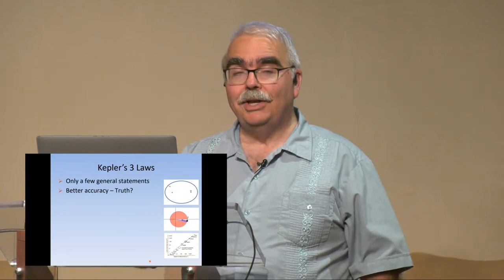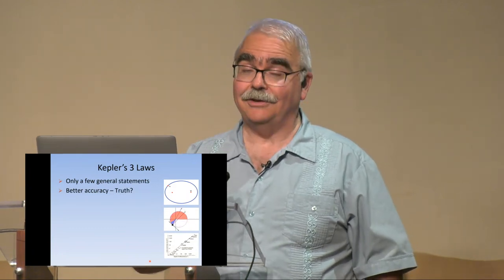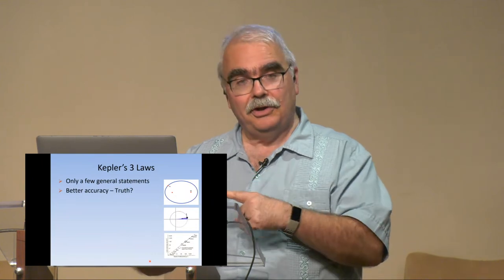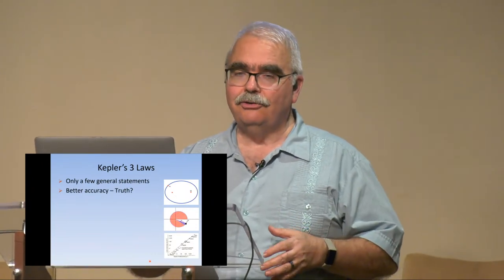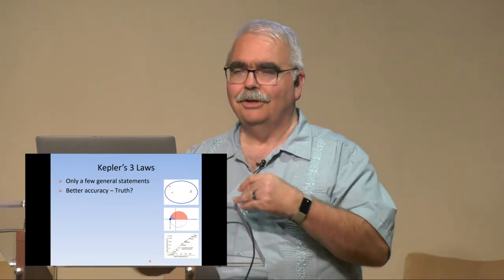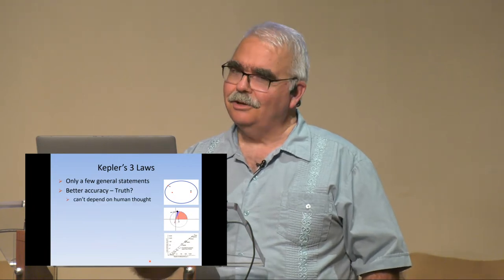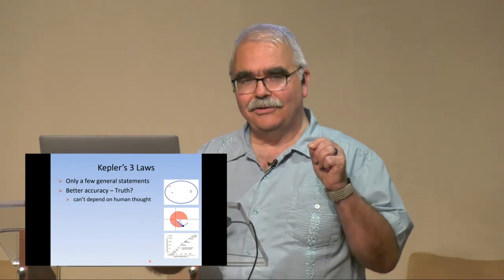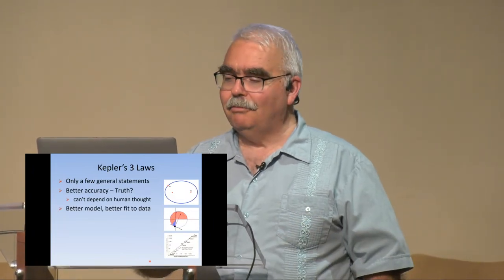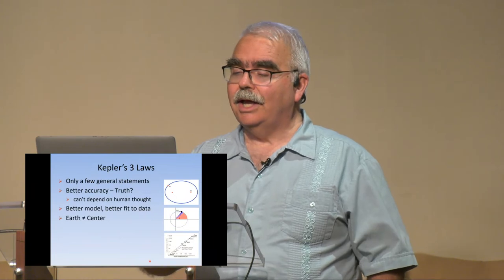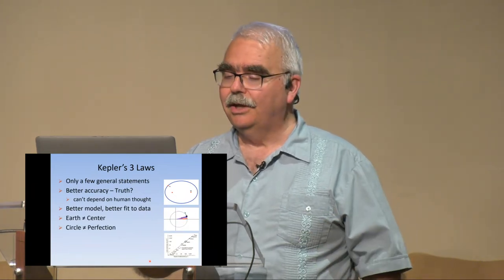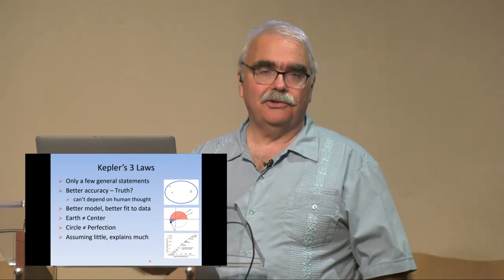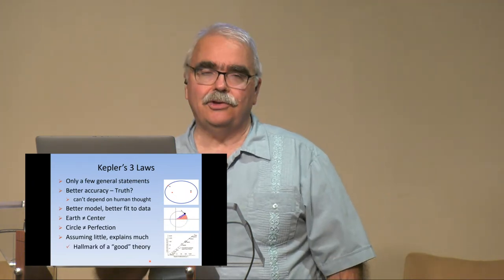In only three rules Kepler explains so many things — better than anyone before. But is that truth yet? The previous models worked very well for a long time. Kepler does better. We cannot depend on human thought as the final arbiter of truth. The earth is not the center, just as Copernicus said. The circle is not perfection either — this is a change. By assuming very little, he explains much. That's the hallmark of a good theory.